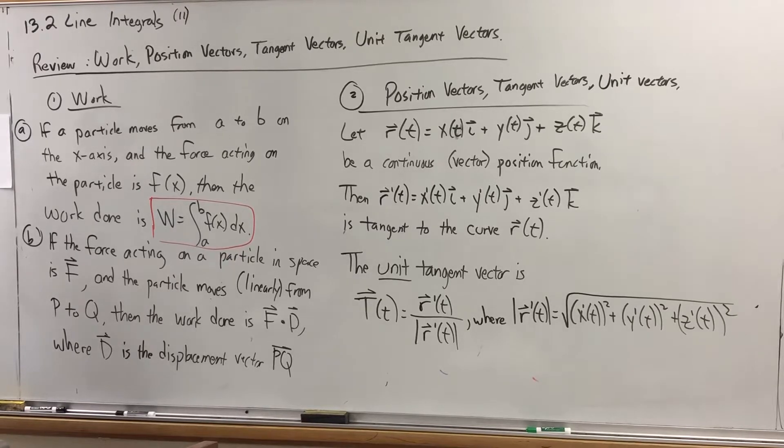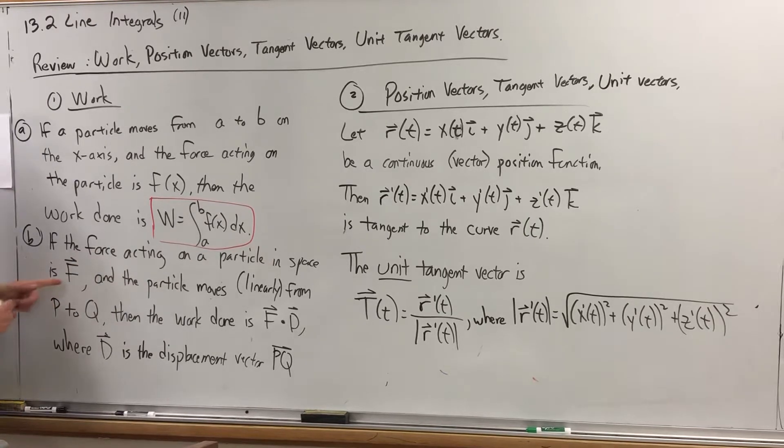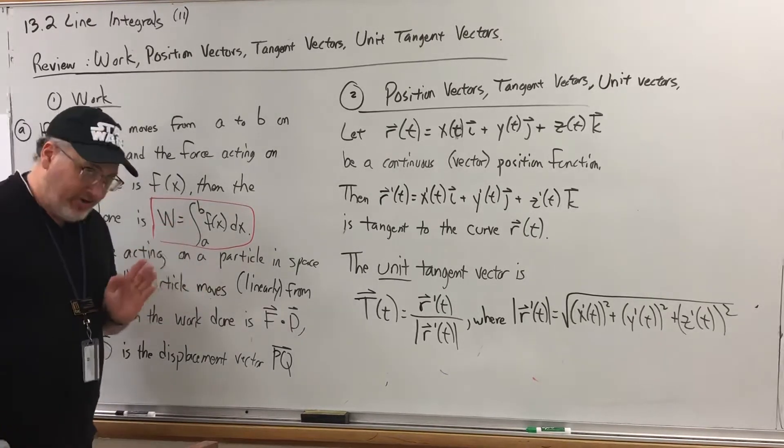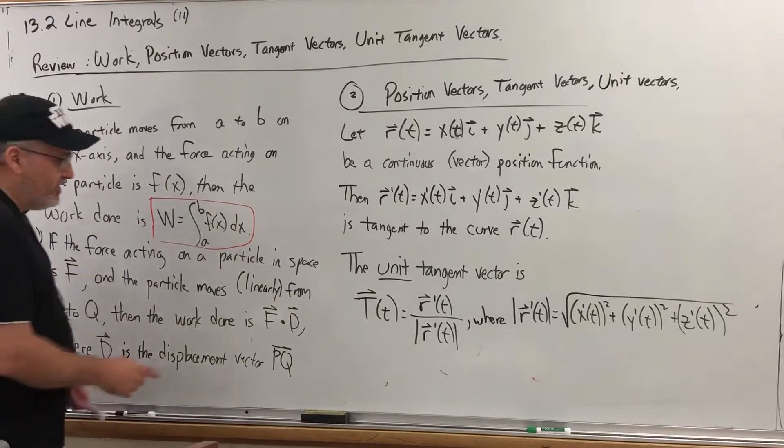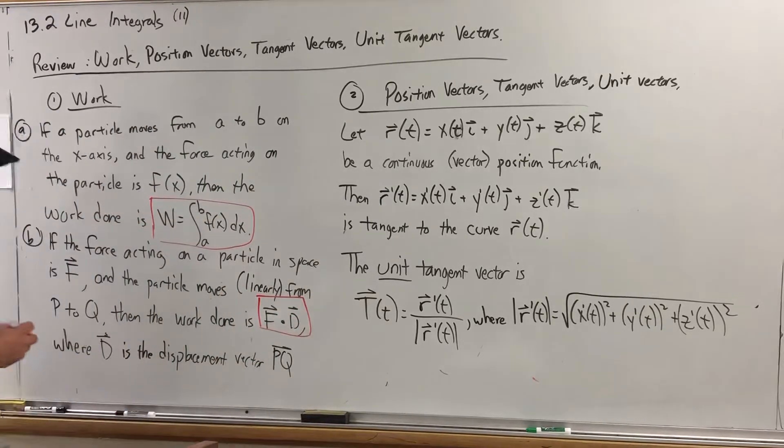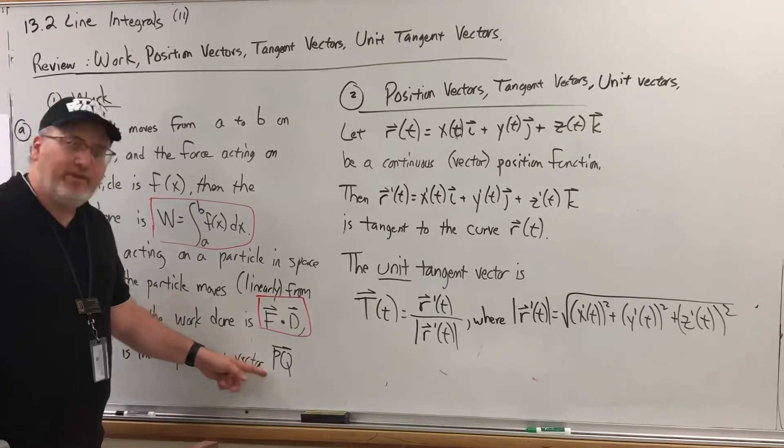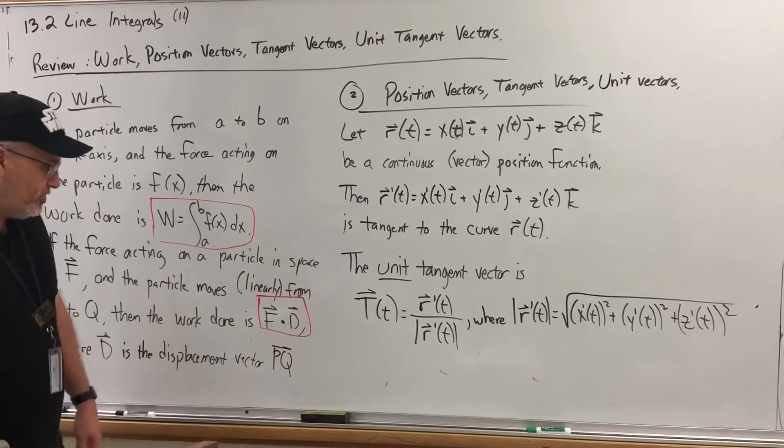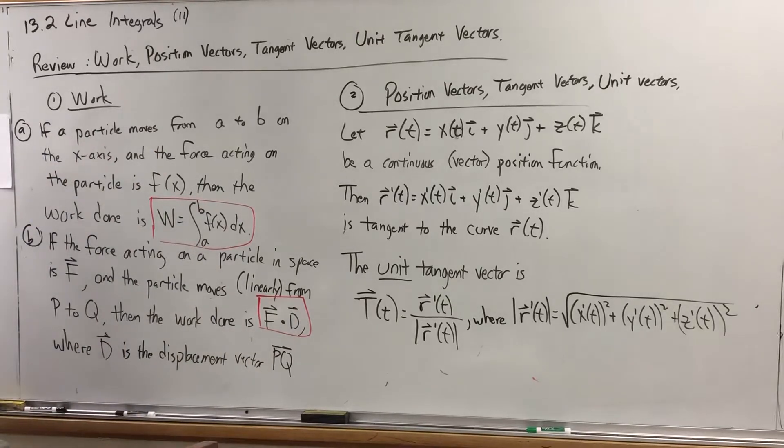But if you have a particle in space with a force acting on it, vector F, and the particle moves linearly from point P to point Q, then the work done is the dot product of the force vector and the displacement vector D, the vector that goes from point P to point Q. So if you knew the coordinates of P and Q, you would just do the Q coordinates minus the P coordinates, and that would give you the displacement vector. We'll be using these when we build the setup for the line integral over a vector field.